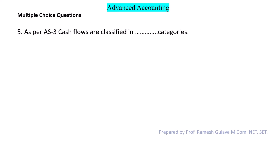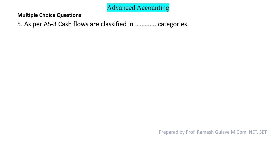Next question: As per AS3, cash flows are classified into how many categories? As we have already discussed, as per AS3 cash flows are classified into three categories. So option B is the right answer.